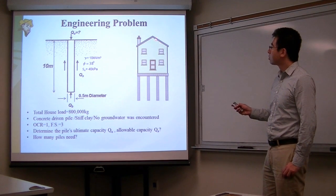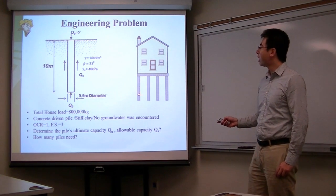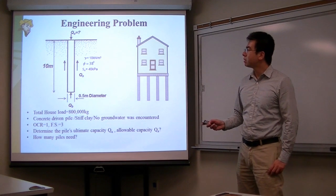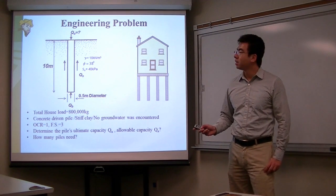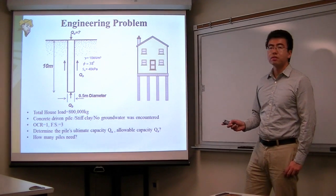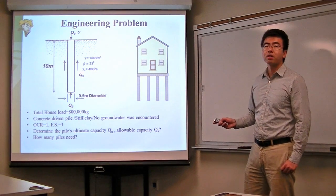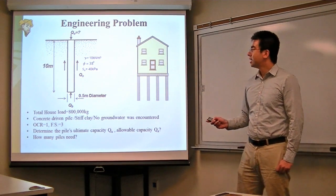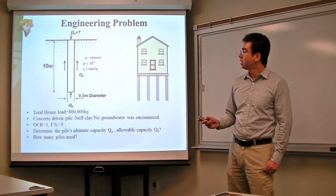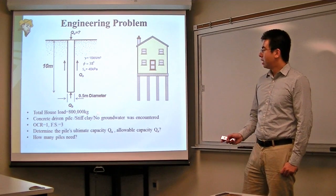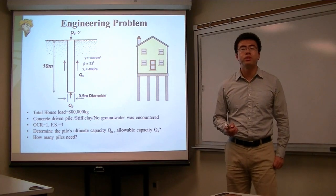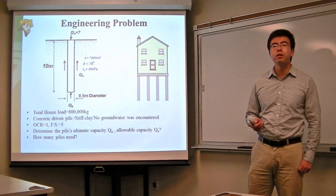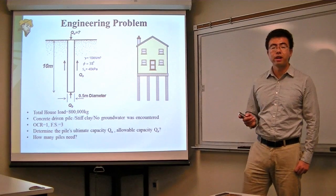Assume we have a two-story building to be built on a pile foundation. The dimensions of the piles are given here. The embedded length is 10 meters, the diameter is 0.5 meters, and the pile is a concrete driven pile. The soil profile has a unit weight of 18 kN per cubic meter, a friction angle of 38 degrees, and an undrained shear strength of 40 kPa. Assume we do not have any groundwater table near the pile. The overconsolidation ratio of the soil is 1, and the factor of safety for this design is 3.